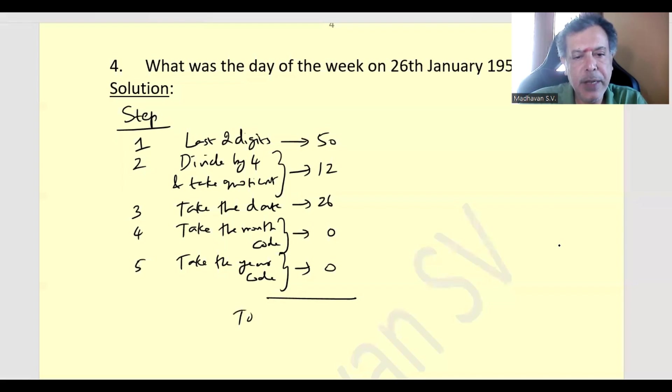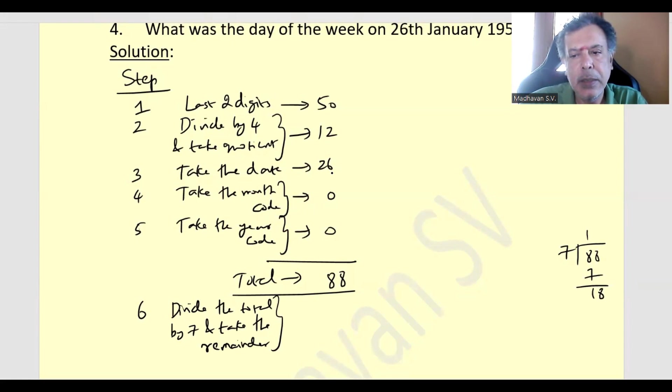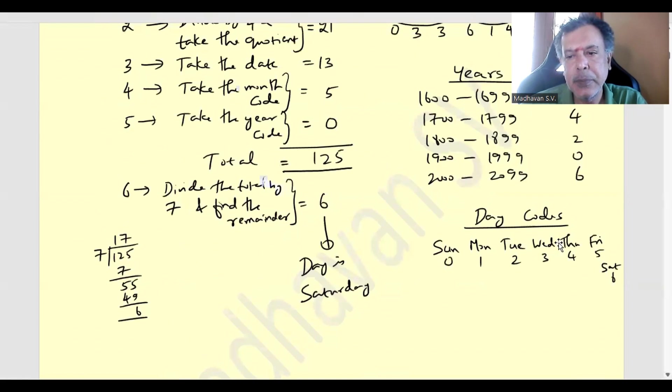Now let us add this and find total. 50 plus 12 plus 26 plus 0 plus 0 equals 88. Sixth step, divide by 7 and take the remainder. 7 into 88. Seven twelves are 84. Remainder is 4. Since 4 is the remainder, then the corresponding day will be Thursday.